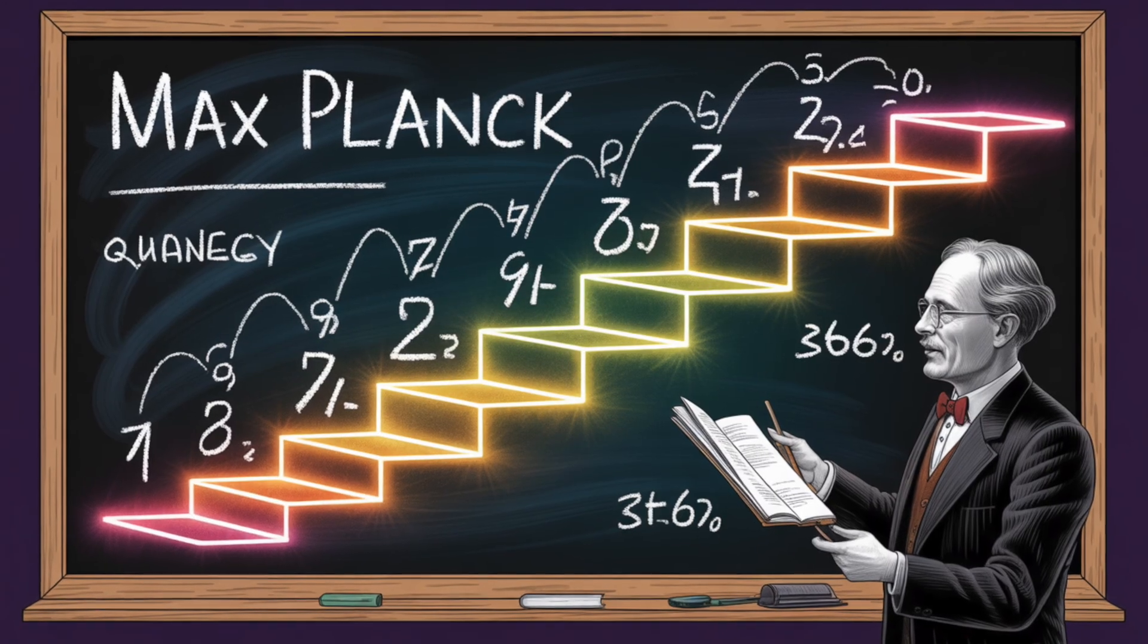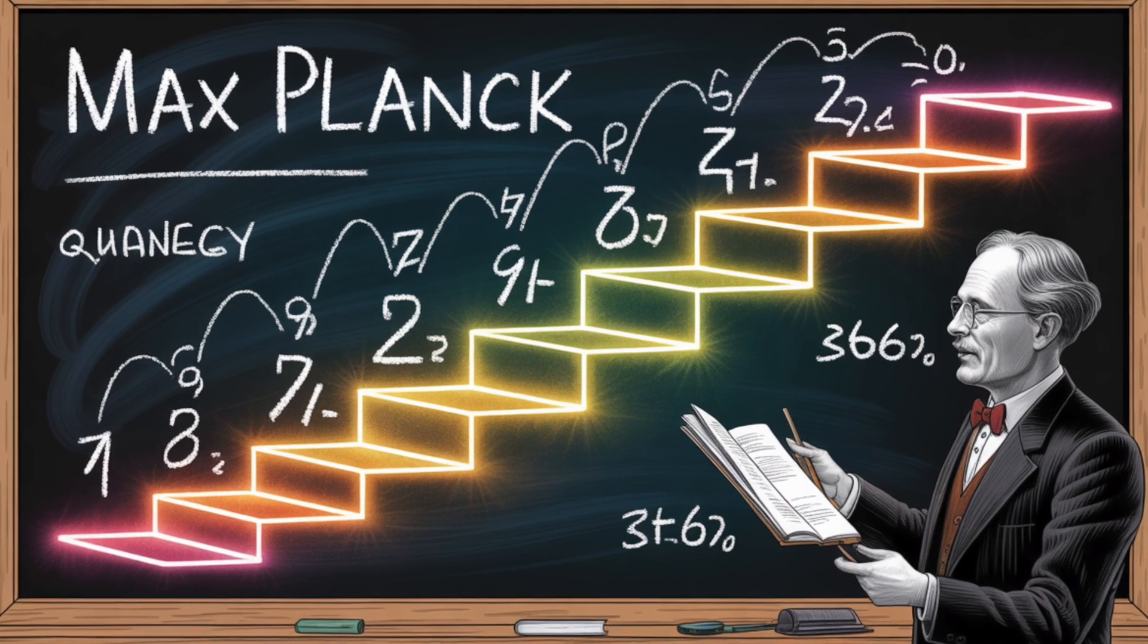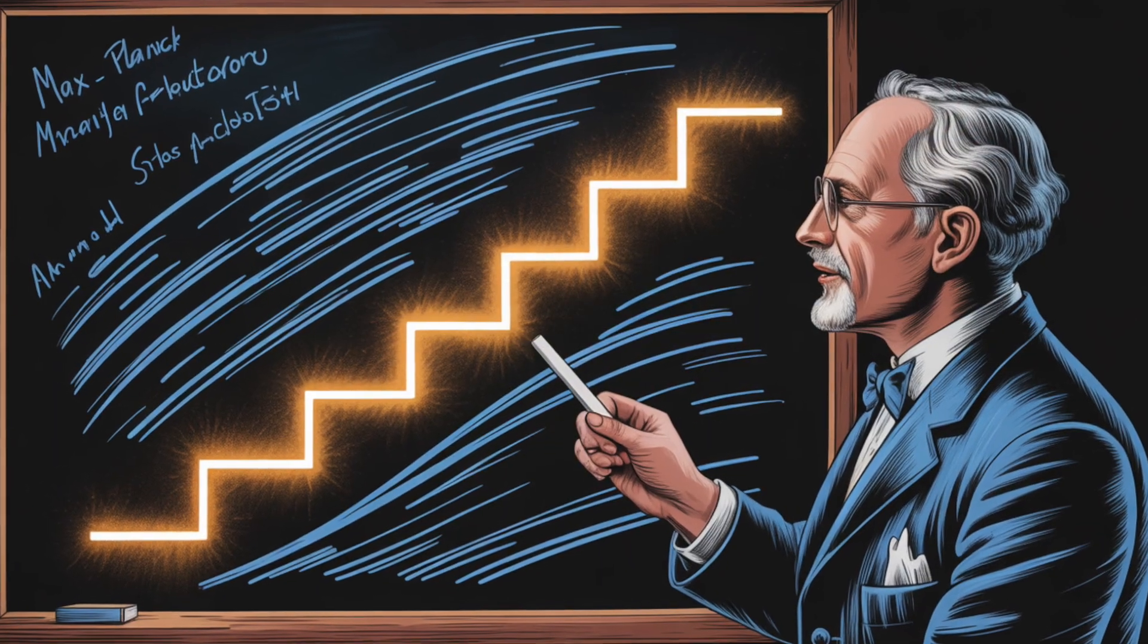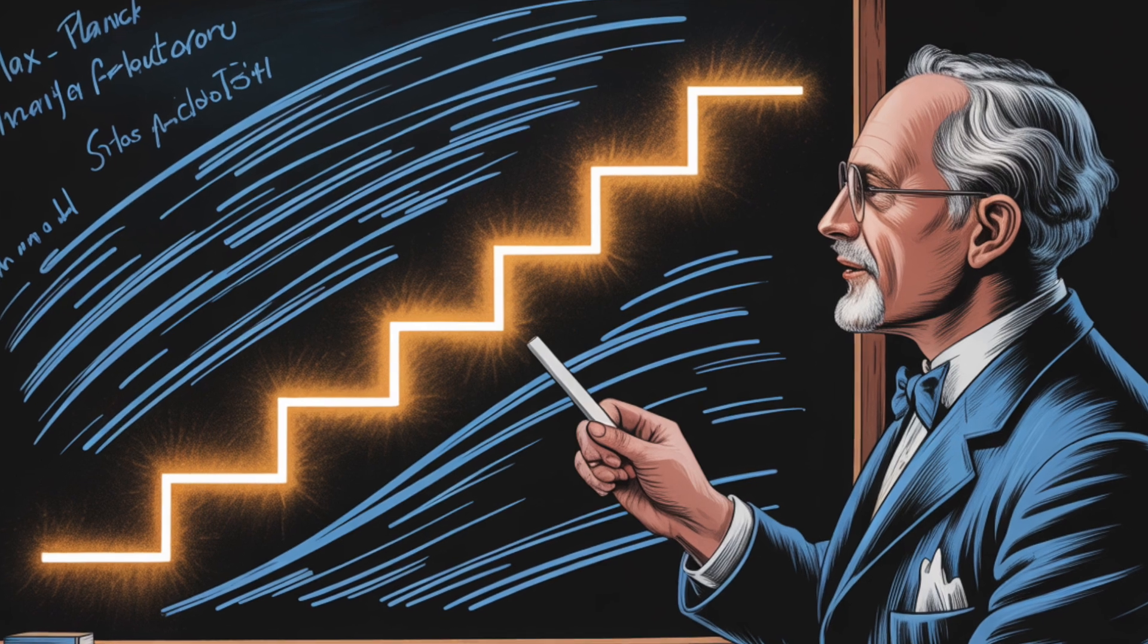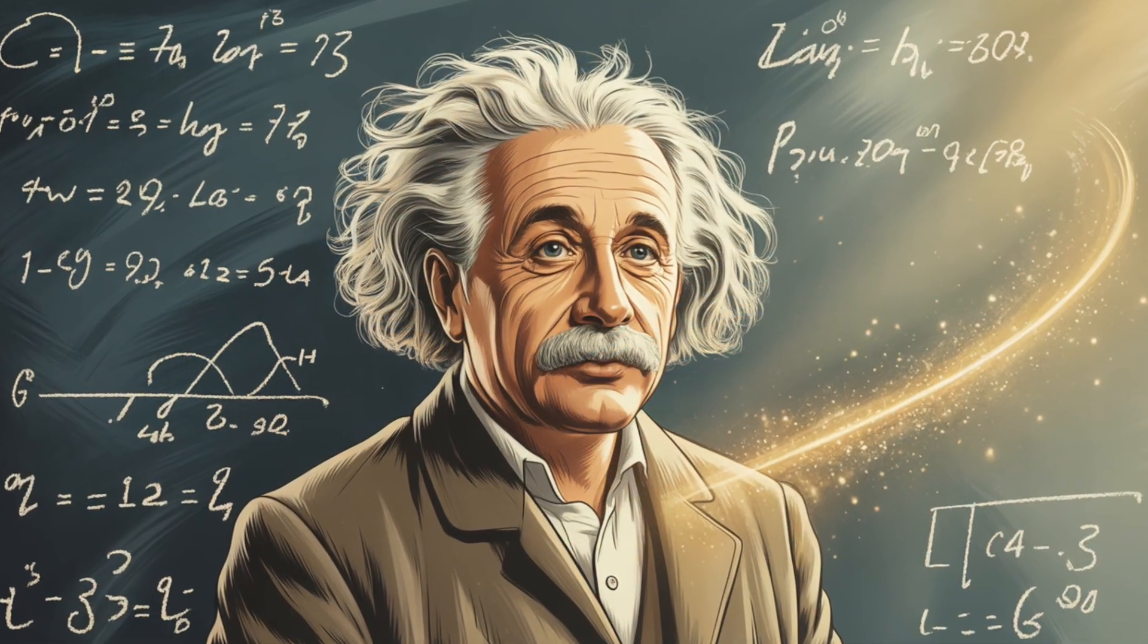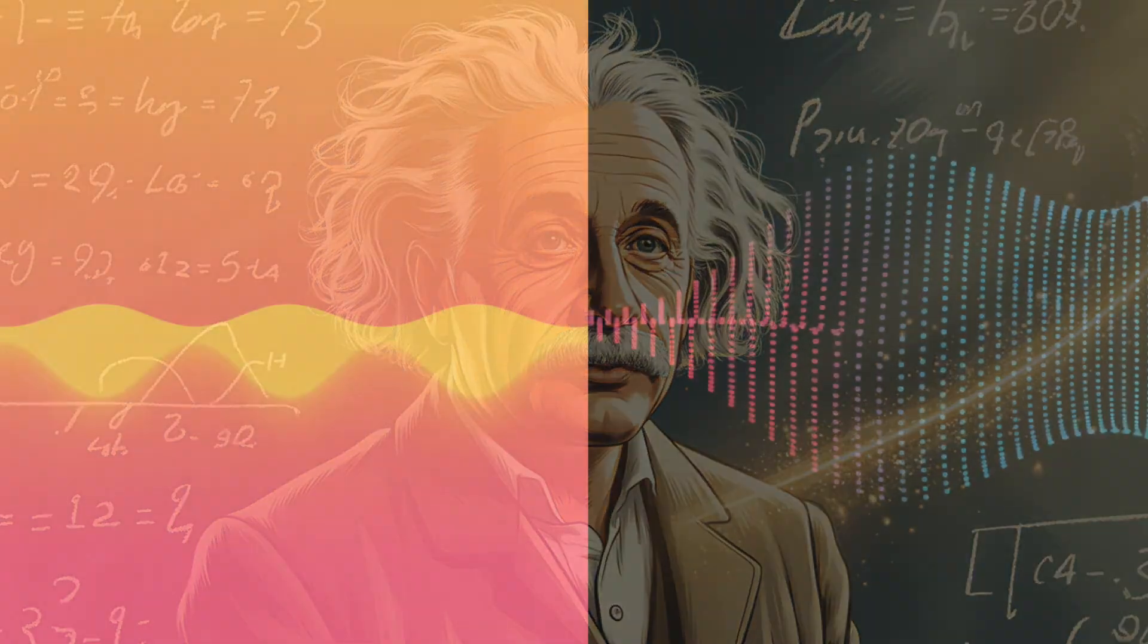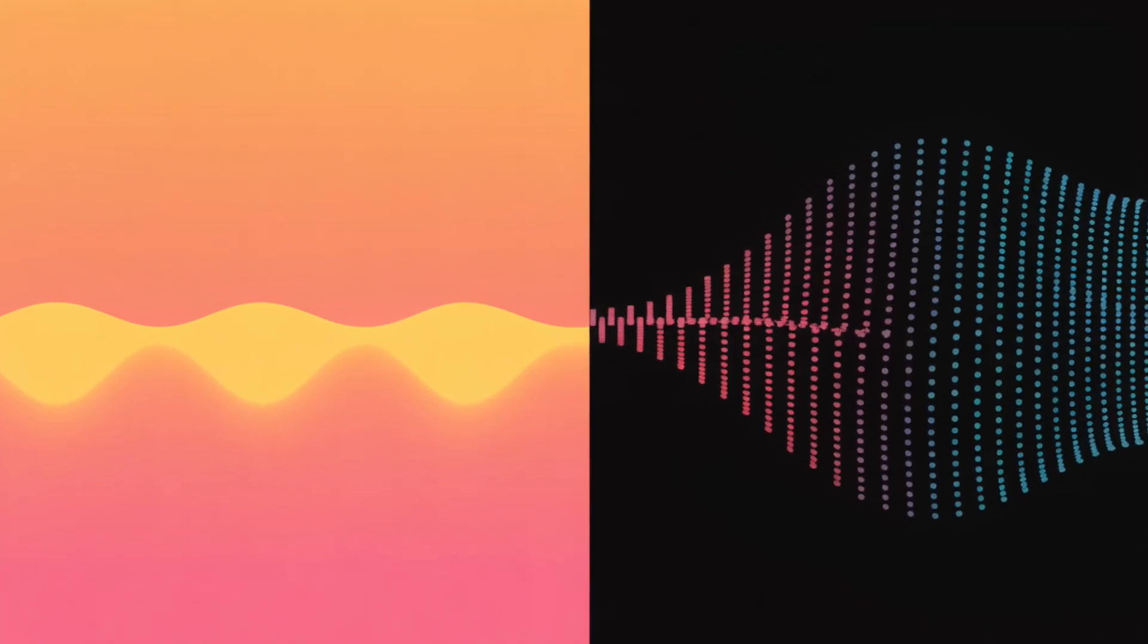Einstein's idea built on the earlier work of Max Planck, who in 1900 had proposed that energy itself comes in discrete chunks. Planck's concept solved the ultraviolet catastrophe in blackbody radiation, but he saw quantization as a mathematical trick. Einstein took it literally. He claimed that light itself was made of quanta, a revolutionary leap. This single idea bridged the invisible gap between matter and energy, waves and particles. It was the dawn of quantum physics.